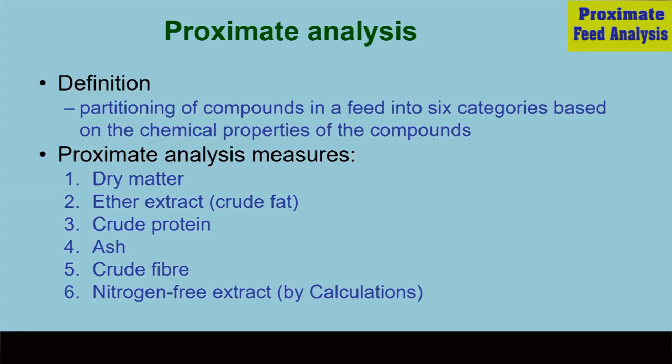Proximate analysis is defined as partitioning of compounds in a feed into six categories based on the chemical properties of the compounds. It means this proximate analysis basically partitions the feedstuff into six categories. Or another way, we can say through proximate analysis, we can measure the dry matter content of a feedstuff.